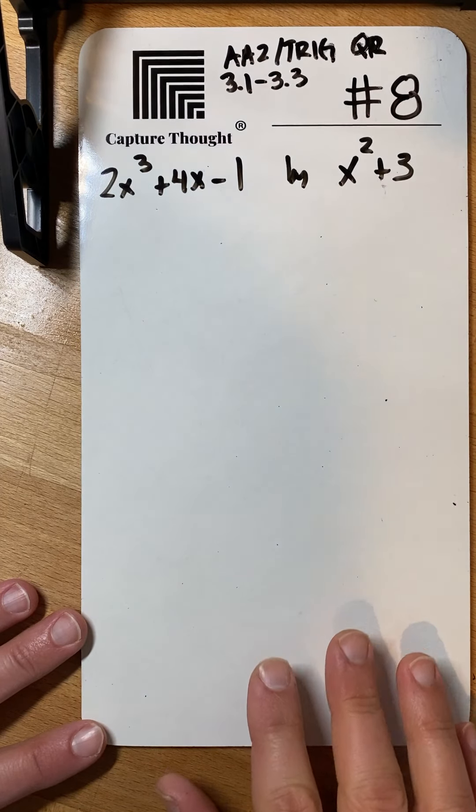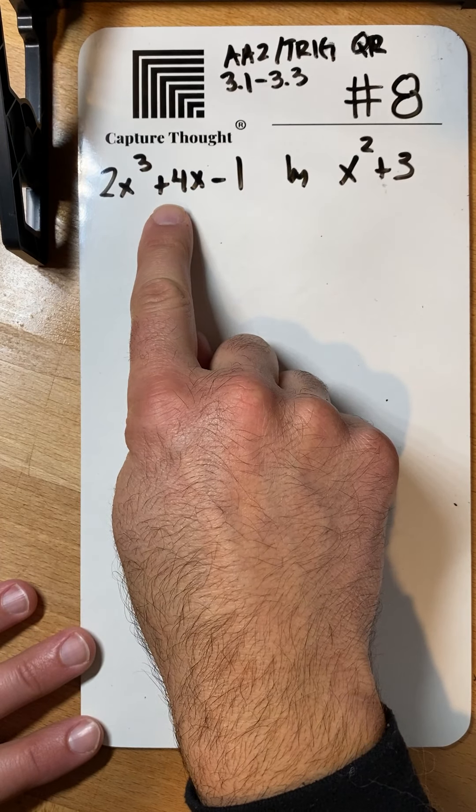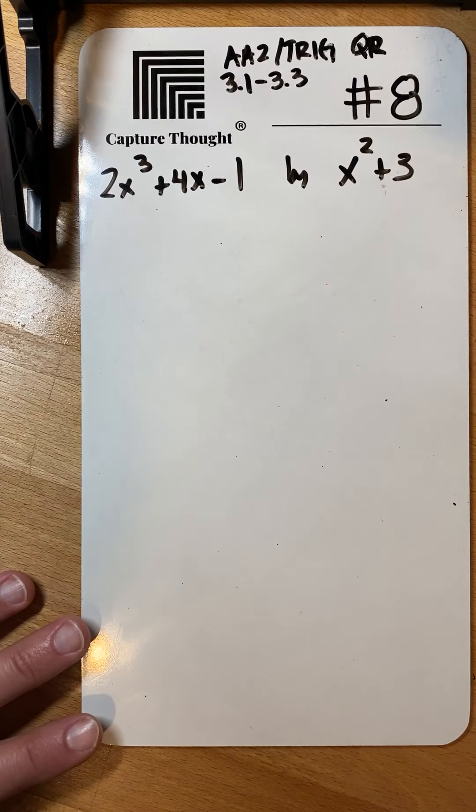Number eight on the QR code review is asking us to divide this polynomial by that polynomial. So a couple things to remember.